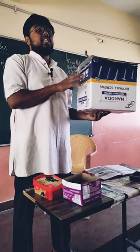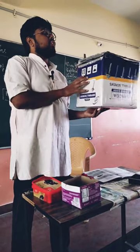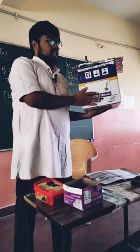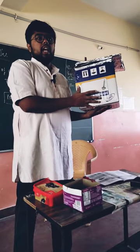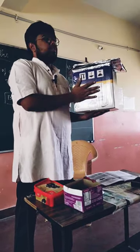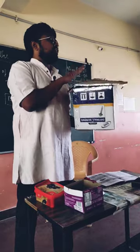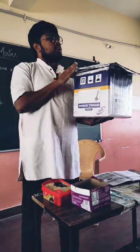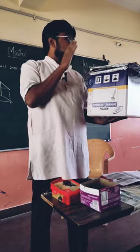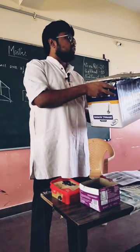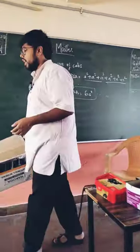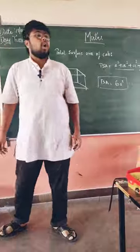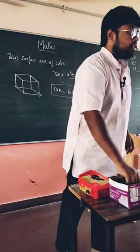You understood how? Six faces — each face if you want to paint, it is this area. If you want this area, it is A into A. Therefore, six faces. Cube means all faces are square faces. So six A squares you have to multiply. Six A into A if you multiply, you will get the total surface area of the cube.